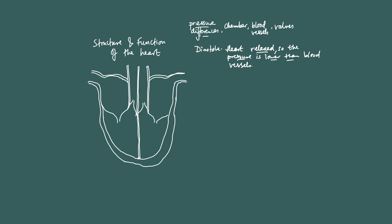Because the heart is relaxed and pressure is lower than the blood vessels, the heart draws in blood. The right atrium draws in deoxygenated blood from the vena cava, and the left atrium draws in oxygenated blood from the pulmonary vein. It's also important to note that because the pressure is higher in the aorta and the pulmonary artery than the ventricles, the semilunar valves are closed — this is what stops blood going from the arteries back into the ventricles.